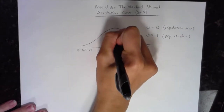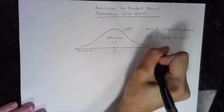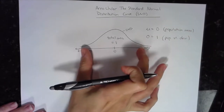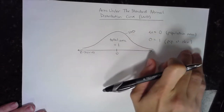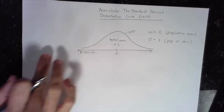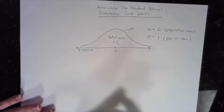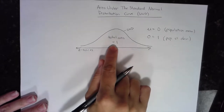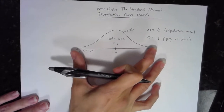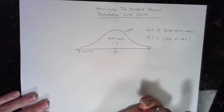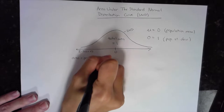The total area under the curve is equal to one, and of course this does continue forever in both directions. The bulk of the area is here within three standard deviations of the mean. It gets very, very thin as we go further to the right or further to the left. Area is the same thing as probability — given that the total area is one, the total probability is one, or 100%.